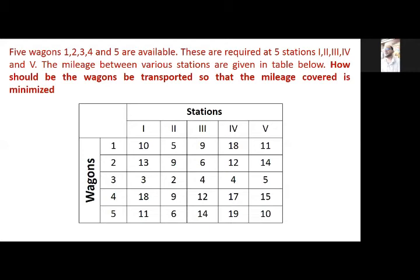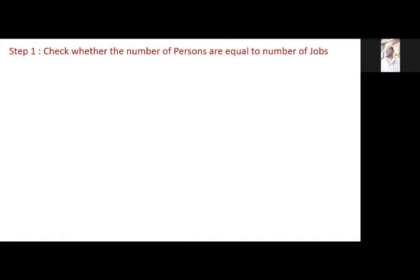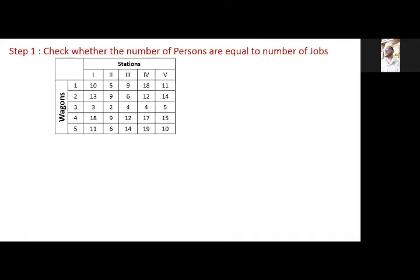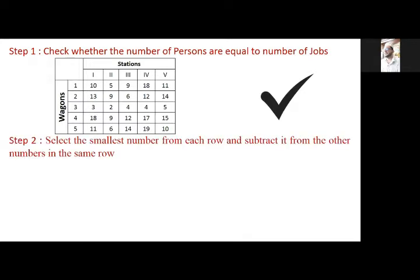The first step of the problem is to check whether the number of persons is equal to the number of jobs. We have 5 wagons and 5 different stations where the wagons are to be transported. So yes, it is satisfied.